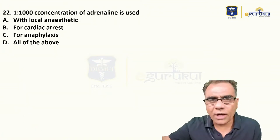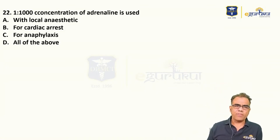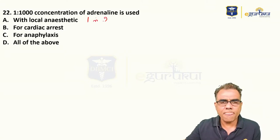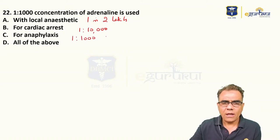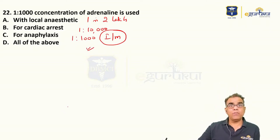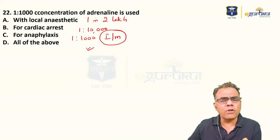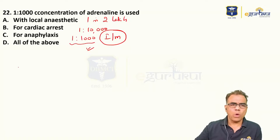Question number twenty-two: 1 in 1000 concentration of adrenaline is used for — with local anesthetics, cardiac arrest, anaphylaxis, or all. With local anesthetics it is 1 in 200,000. For cardiac arrest it is 1 in 10,000. For anaphylaxis given IM, it is 1 in 1000. If given IV, then 1 in 10,000. Anaphylaxis is almost always given IM, so the concentration is 1 in 1000. Answer: anaphylaxis.